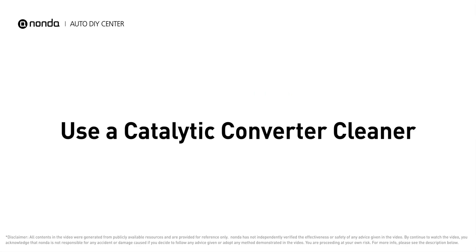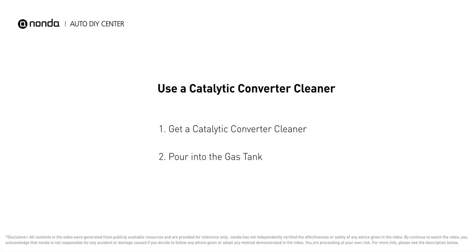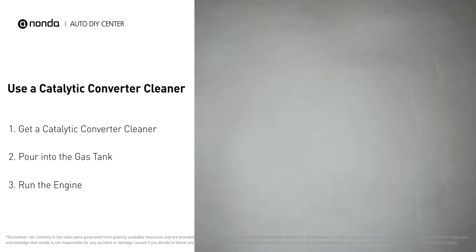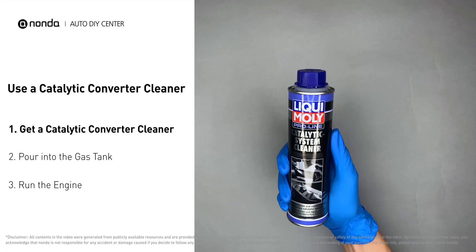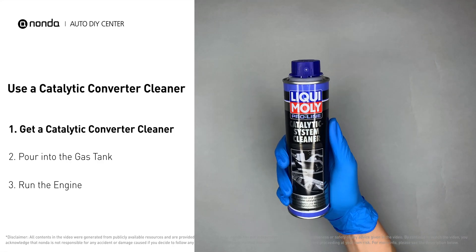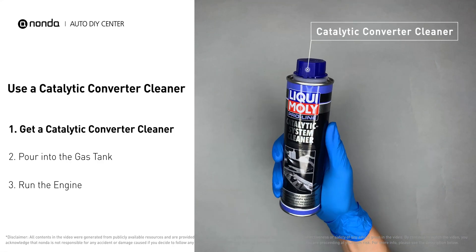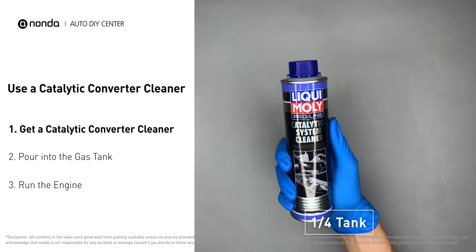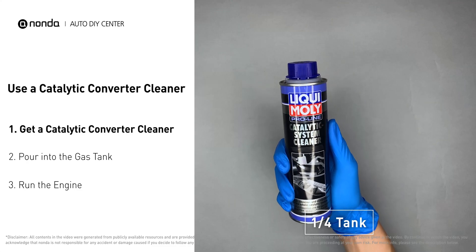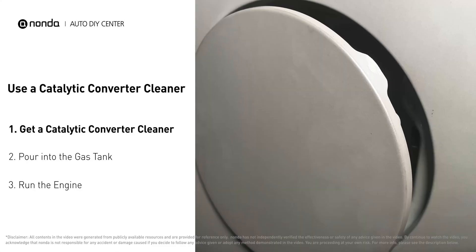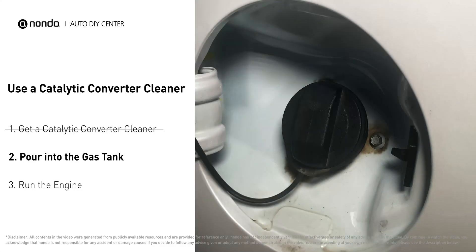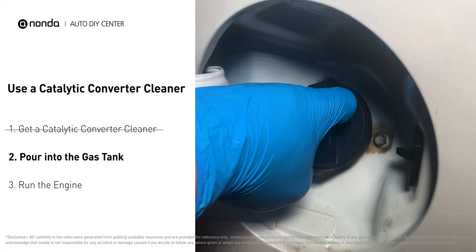If you are getting a P0430 error code, this video is going to show you a practical solution to fix the error code at home. There are many different kinds of converter cleaner — normally they are all under $20. Reduce the fuel level in your car to about one-fourth of a tank, then simply pour the cleaner into the gas tank.